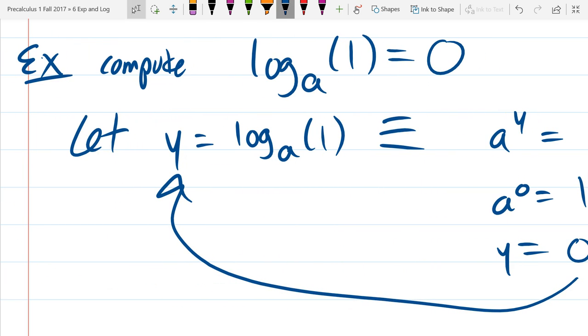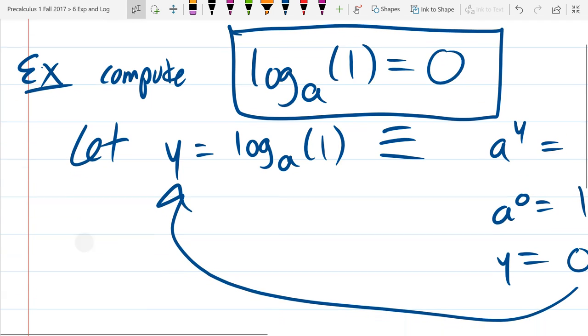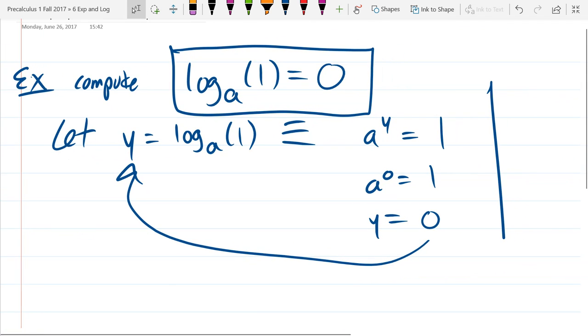So that's our first identity right there in this section. So log base a of 1 equals 0.